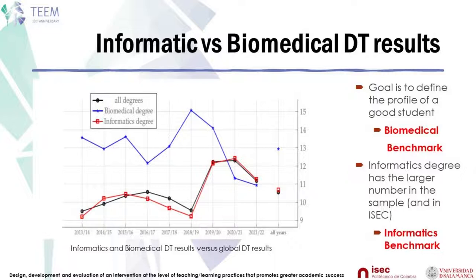The average score of 10.55 shows that mathematical knowledge is far below what is desired. The degree in biomedical engineering presents the best results, which is why it is considered a benchmark. The degree in informatics engineering has the largest number of students in the sample, so the study was also focused on this degree.